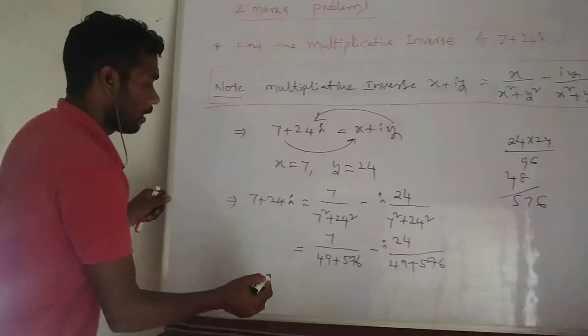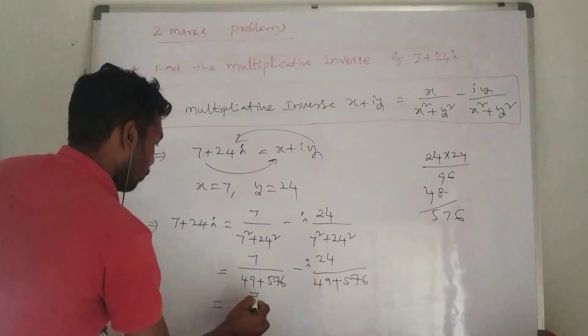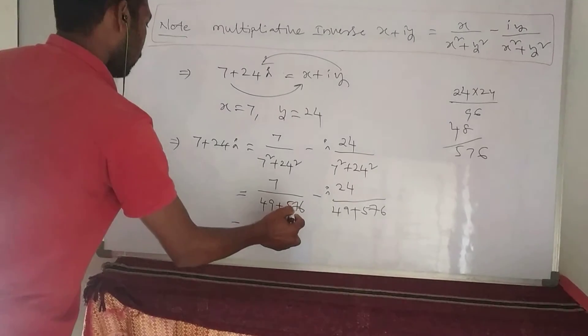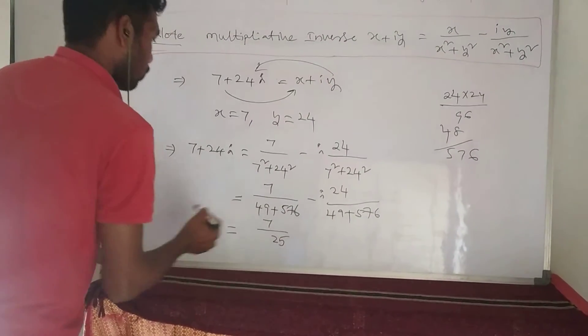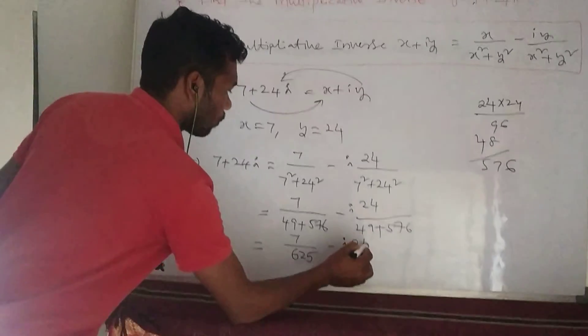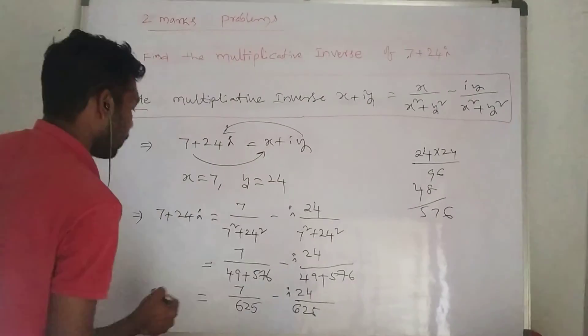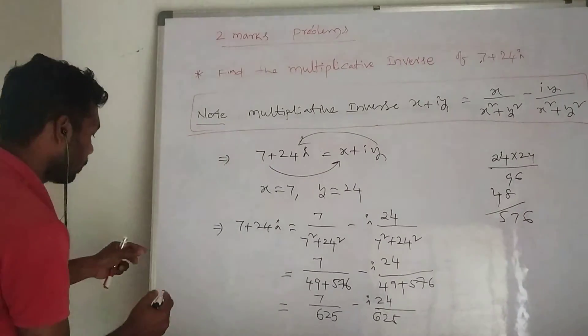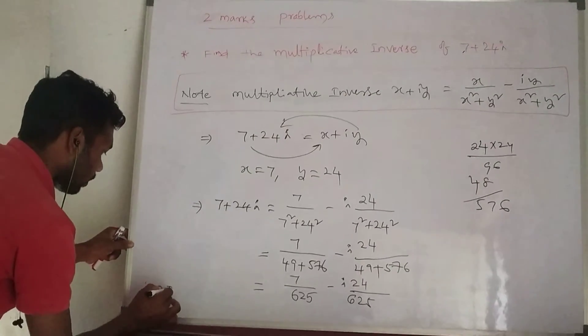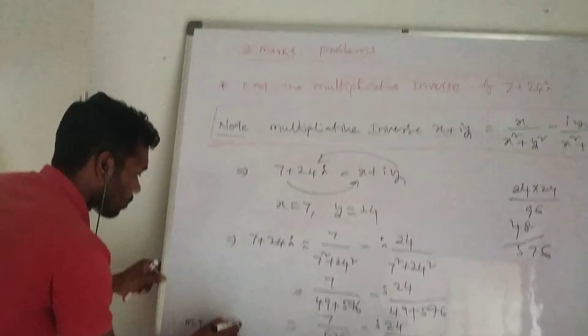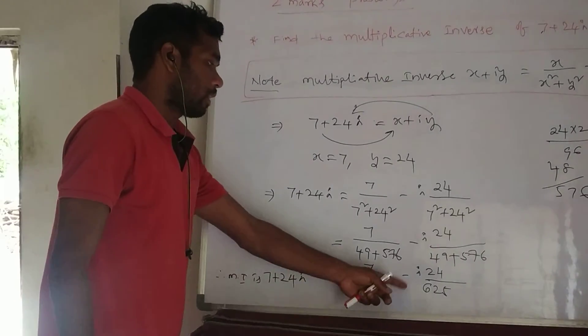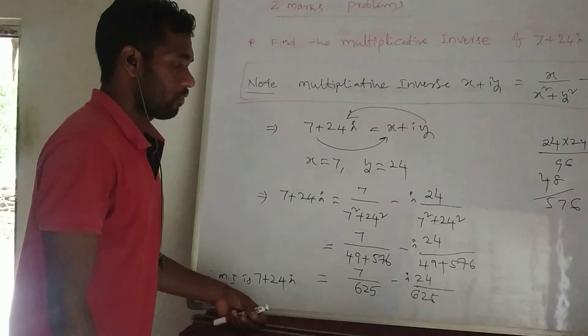Therefore, the multiplicative inverse of 7 plus 24i is 7 by 625 minus i times 24 by 625. That is the answer.